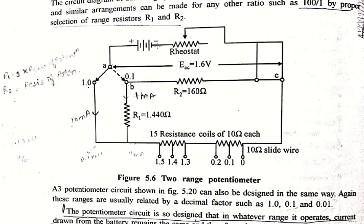The condition can be achieved only if the voltage EAC remains the same for both ranges of potentiometer, so that the current drawn from the battery remains same for both positions of the range selector switch. The current through resistor R2 should be equal to 1mA on range 1.0 and 10mA on range 0.1.